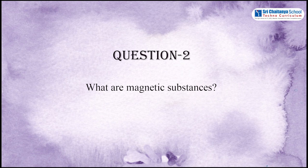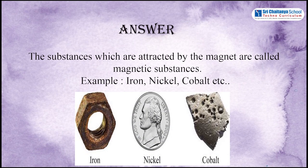Question number 2: What are magnetic substances? Answer: The substances which are attracted by the magnet are called magnetic substances. Example: iron, nickel, cobalt, etc.